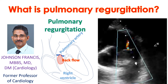Pulmonary regurgitation is the leak in the pulmonary valve between the right ventricle and pulmonary artery. The right ventricle is the lower right chamber of the heart which pumps blood returning from the body to the lungs for oxygenation. The pulmonary artery is the blood vessel which carries the blood pumped out by the right ventricle into the lungs.